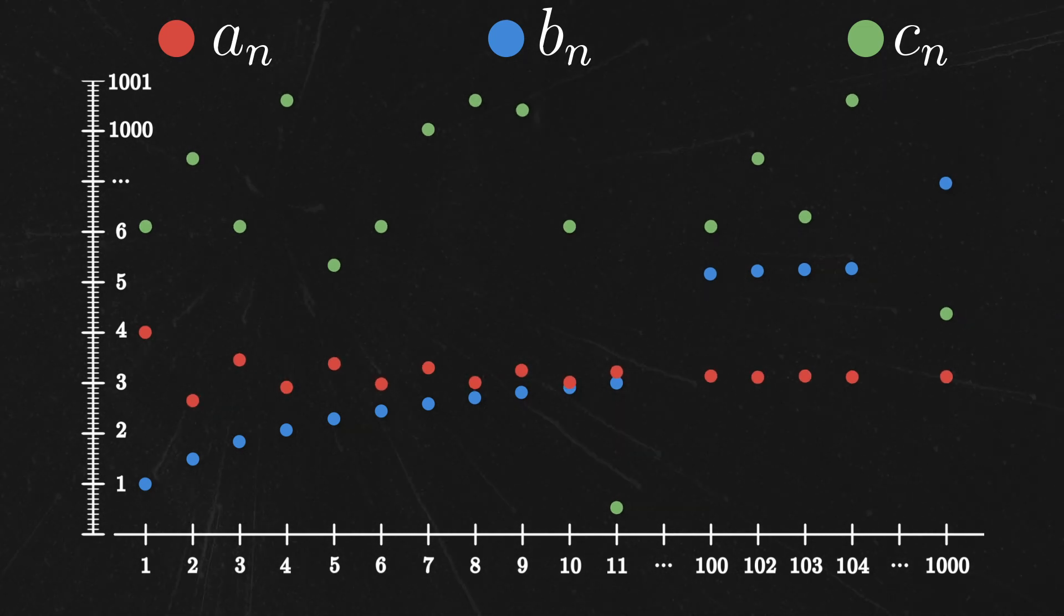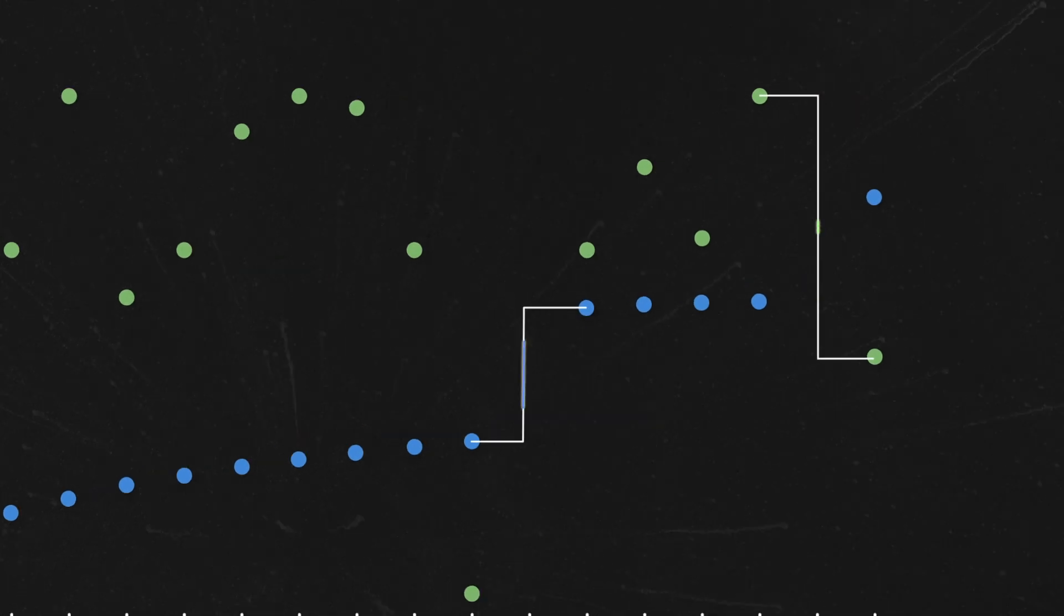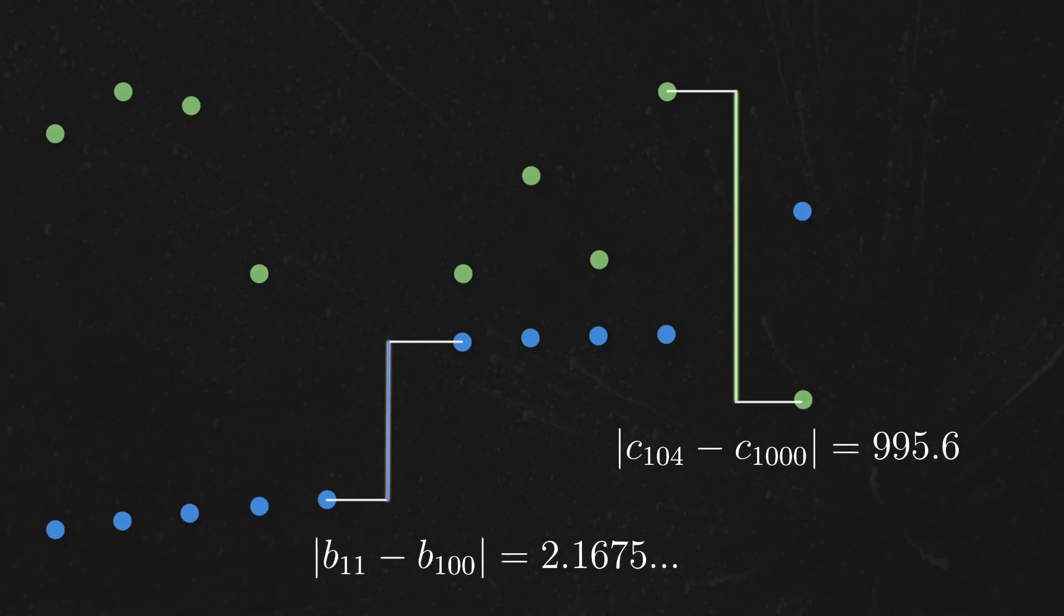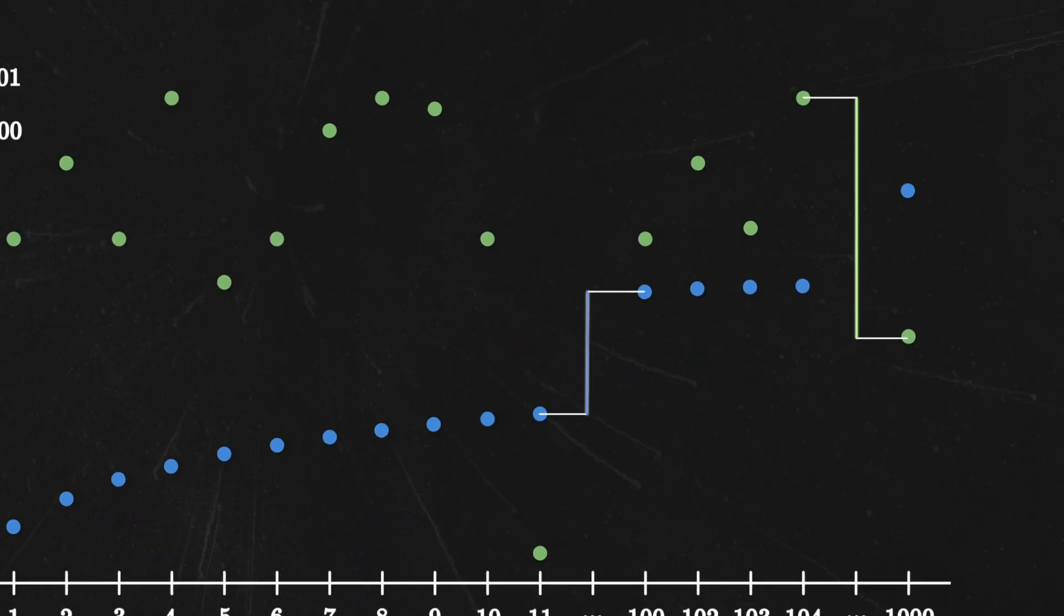One thing that the bad sequences have in common is that their points get far away from each other, or at least the relative distances don't tend to decrease in general.